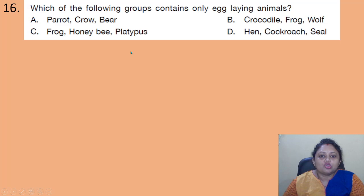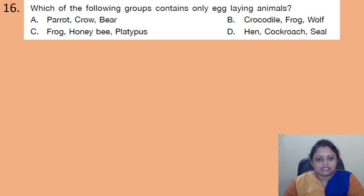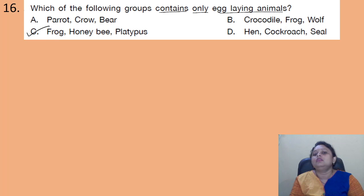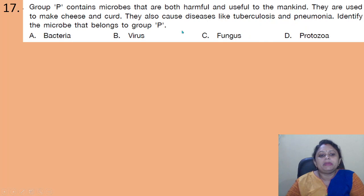Coming to the next question: which of the following groups contains only egg-laying animals? A - parrot, crow, bear; B - crocodile, frog, wolf; C - frog, honeybee, platypus; D - hen, cockroach. We have to find the group with only egg-laying animals. The correct answer is option C — frog, honeybee, and platypus are all egg-laying animals.